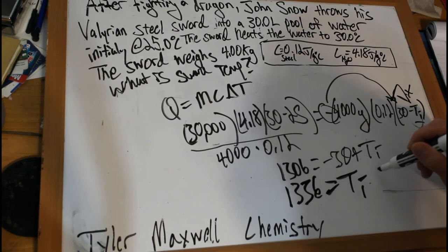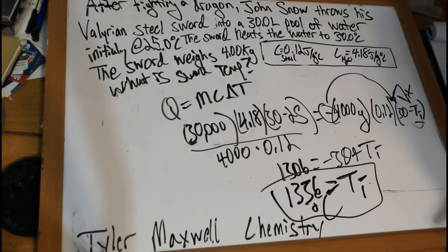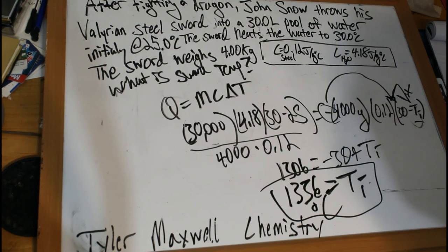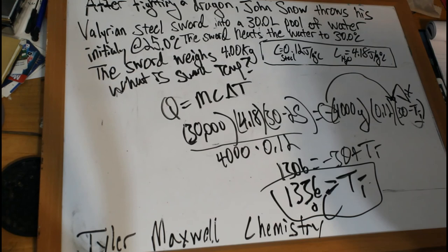So there you go guys, Jon Snow's sword: 1336 degrees Celsius after he fought that dragon. And you have my very famous Game of Thrones most favorite problem. I hope you guys enjoyed it. Give it a like, thumbs up, comment. Let me know what you guys want to see in terms of videos: if you want me to work more problems, if you want me to talk more about the theory stuff like that, just let me know. Send me a message if you have any questions on anything. All right, see you guys.